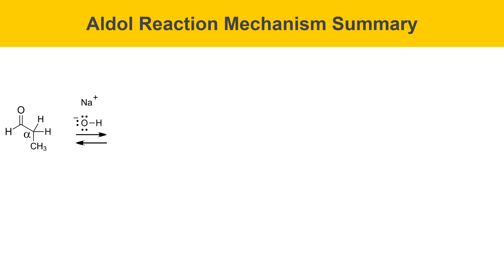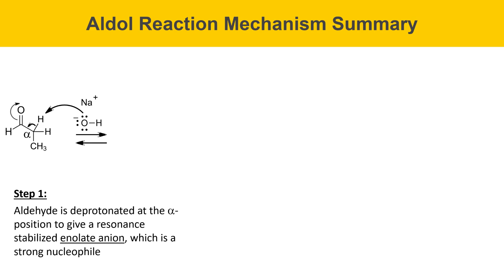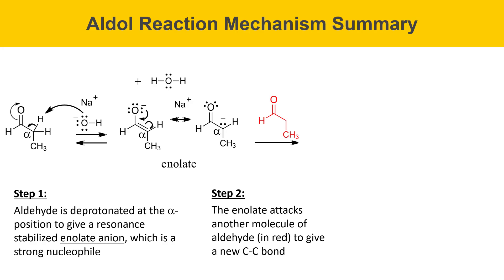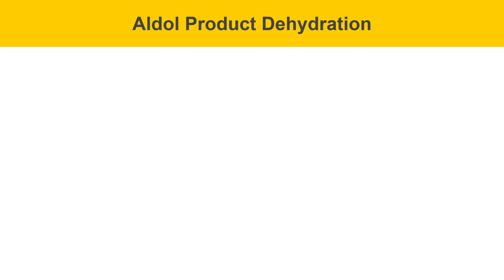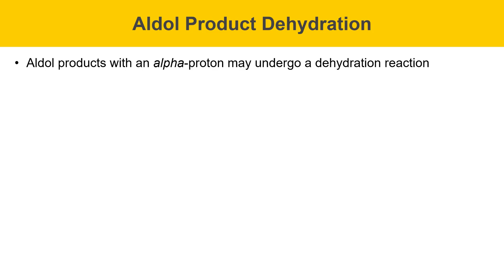Now I'll summarize the aldol reaction mechanism. In the first step, the aldehyde is deprotonated at the alpha position to give a resonance-stabilized enolate anion, which is a strong nucleophile. That enolate attacks another molecule of aldehyde through its alpha position to give a new C-C bond and water. Then water supplies a proton to give the neutral aldol product, and sodium hydroxide is regenerated. Aldol products can sometimes undergo dehydration reactions, as is the case in today's experiment. The key factor is whether the aldol product has an alpha proton — our aldol product does have one, and it's subject to deprotonation by a base.